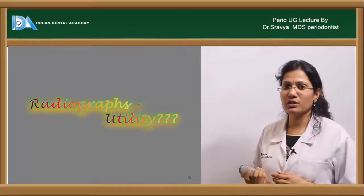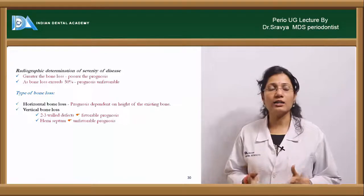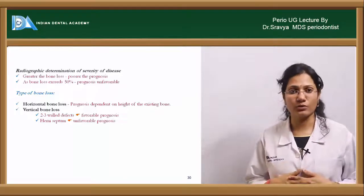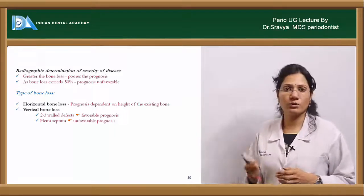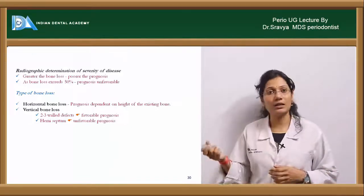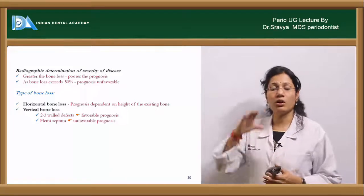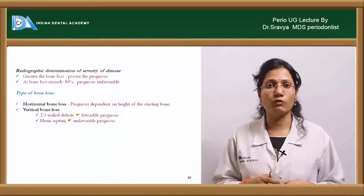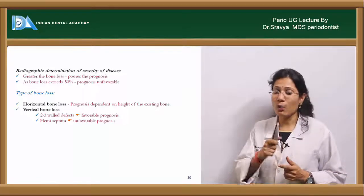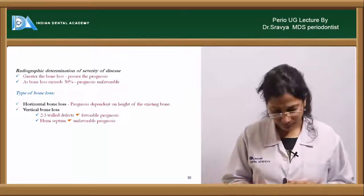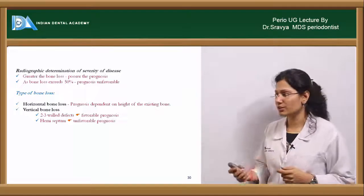What is the importance of radiographs in determining prognosis? Radiographs will show only what has already happened — they will show only the past changes and will not show the present clinical scenario. The greater the bone loss, the poorer would be the prognosis. As the bone loss exceeds more than 50%, the prognosis becomes unfavorable. Depending on the type of bone loss seen on a radiograph — horizontal bone loss prognosis depends on the height of bone remaining — if you have a vertical pattern of bone loss, the height matters and even the type of bony defect. A one-walled defect always has a poor prognosis compared to two- or three-walled defects, because two- to three-walled defects can be treated using regenerative procedures.